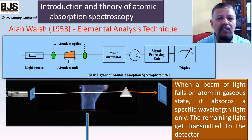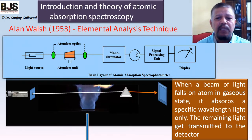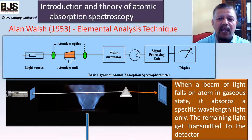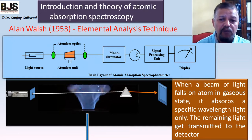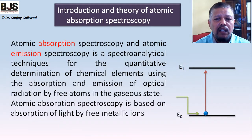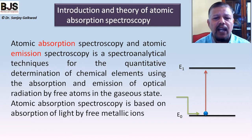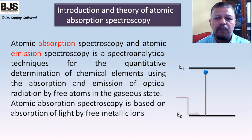How much light gets absorbed depends on how many atoms are present in the solution. When a beam of light falls on atoms in a gaseous state, they absorb a specific wavelength only; the remaining light is transmitted to the detector. When atoms go to the excited state and remain there, they absorb the radiation — this is the principle on which atomic absorption spectroscopy works.